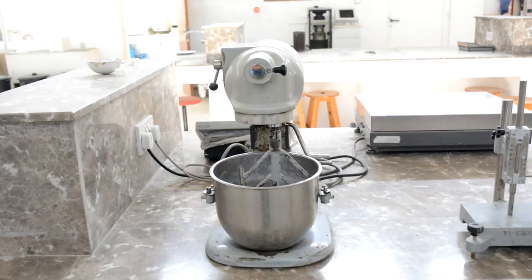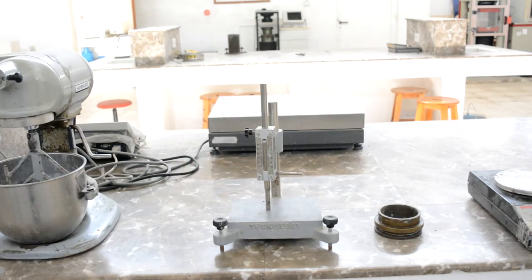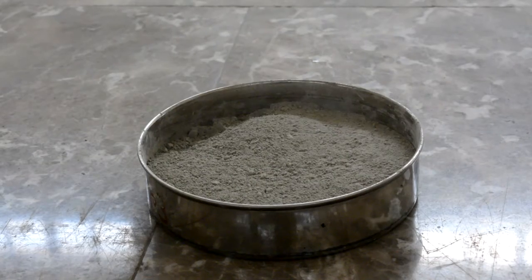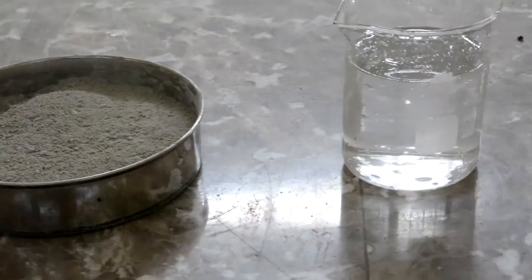To perform this experiment you need the following: a mixer, a v-cat apparatus, a conical ring, a balance, 650 grams of hydraulic cement, and water.